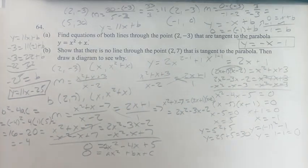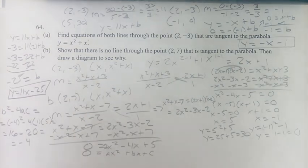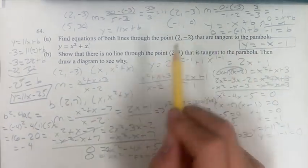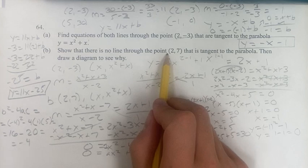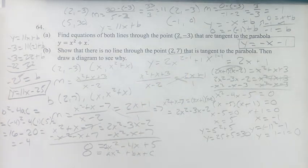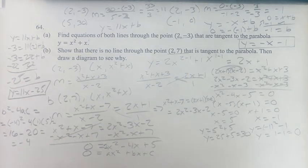In conclusion, we found both lines tangent to the parabola that go through the point (2, -3), and we showed why there aren't any tangent lines through the point (2, 7). Thank you for liking and subscribing, and I'll see you in the next video.